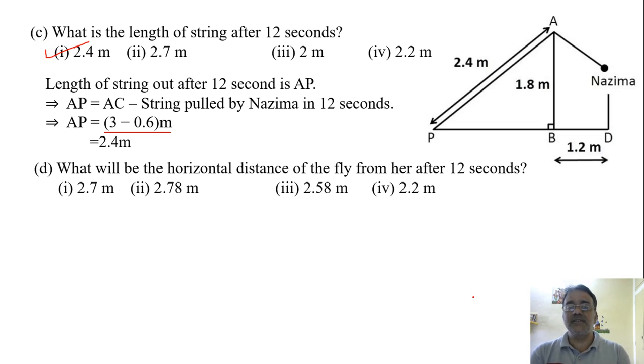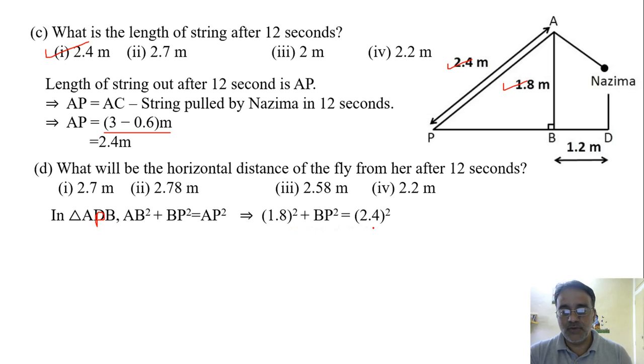What will be the horizontal distance of the fly from her after 12 seconds? Now in triangle APB, this is P. AP² + BP² = AB². The value of these two is known to us, so we're going to find the value of BP. So 1.8² + BP² = 2.4². This is 3.24 and this is 5.76.